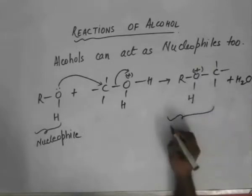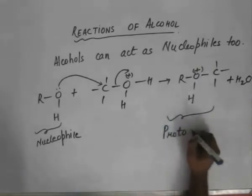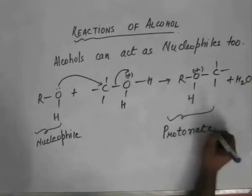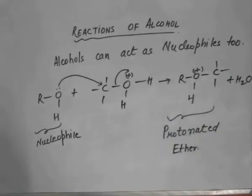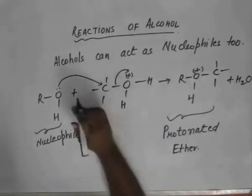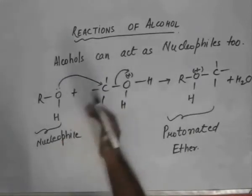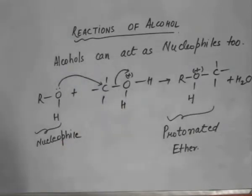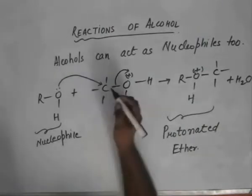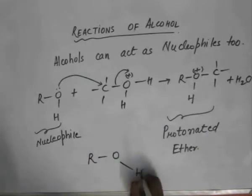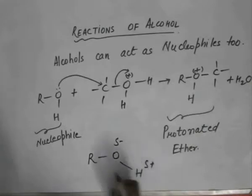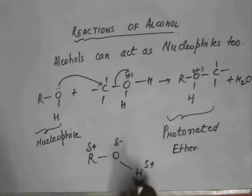We are left with protonated ether. This is a protonated ether. This is one of the ways in which we can prepare ether, as we will see in further lectures. We got a general idea that because of the charge separation at the O–H bond and the C–O bond, the whole reaction chemistry of alcohols can be explained.